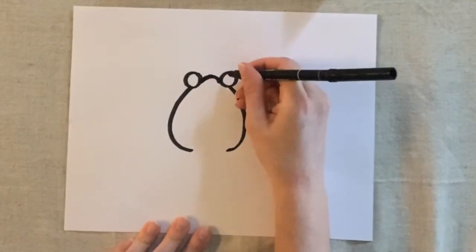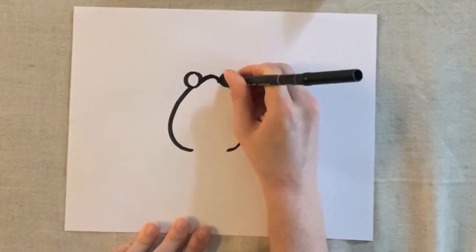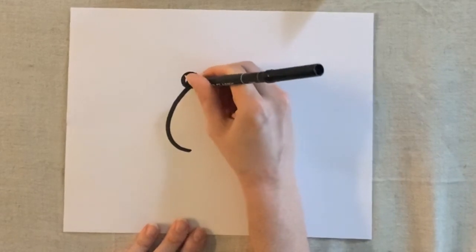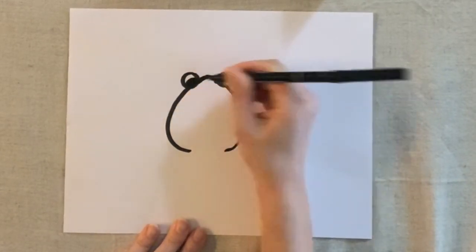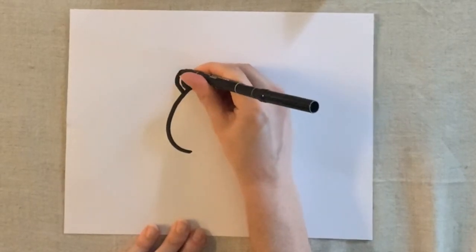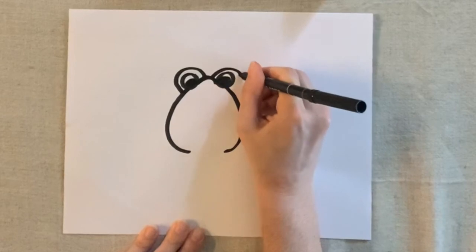Next, if you'd like to, you can add some detail for your frog's eyes. So I'm going to make the inner part of his eyes and I'm also going to add the eyelid.